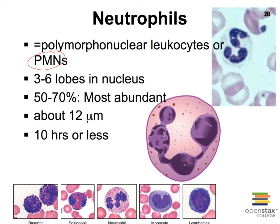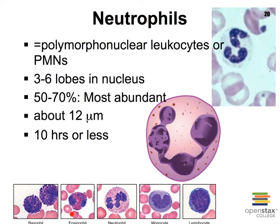Neutrophils are often referred to as PMNs in hospitals, which stands for polymorphonuclear leukocytes — meaning they have multiple lobes in their nucleus, as you can see in the pictures. You can also see red blood cells nearby a neutrophil; red blood cells average about 7 to 8 micrometers in diameter, so it makes sense that the average diameter of a neutrophil is about 12 micrometers. This is our neutrophil shown here, so you can see some of the size differences.